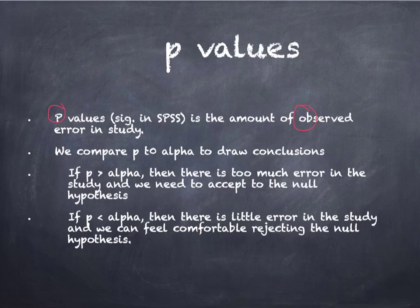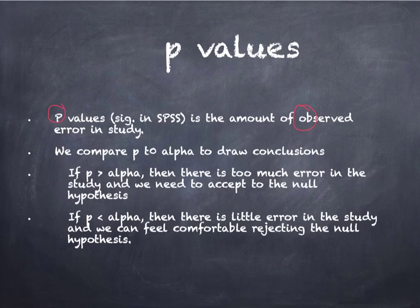If your observed error is greater than alpha — so if you've observed more error than you're allowing — then you have to say there's too much error in the study, and we accept the null hypothesis. If p is less than alpha, so the observed error is less than your allowable error, then there is little error in the study, and we can feel comfortable rejecting the null hypothesis. That might result in saying that relationships exist, or that groups are different.